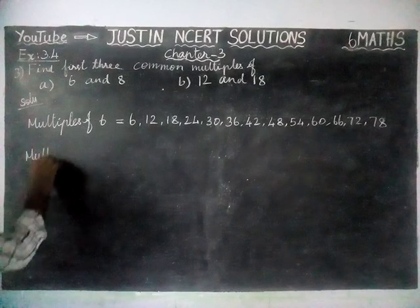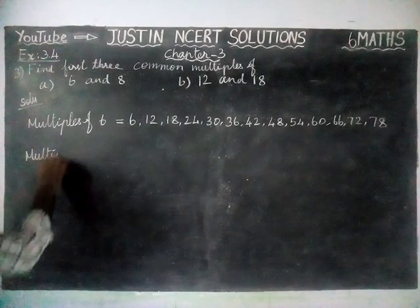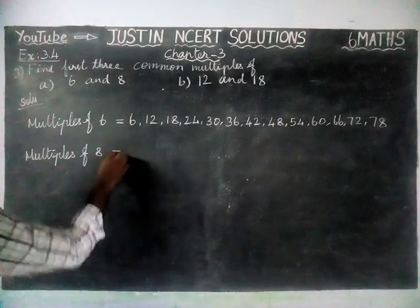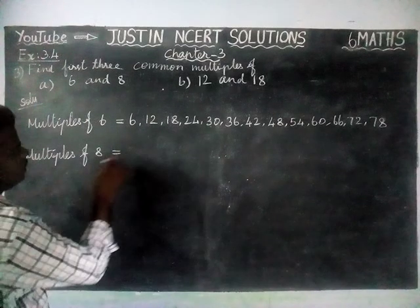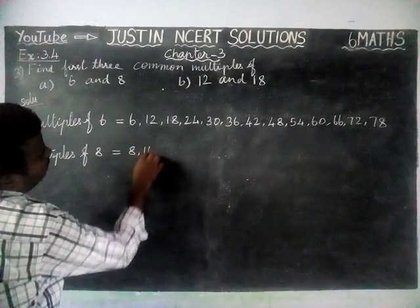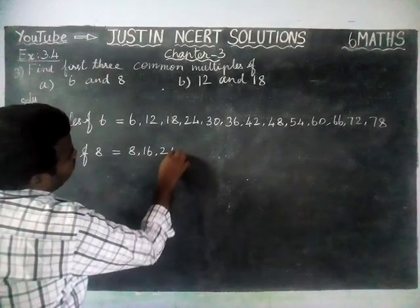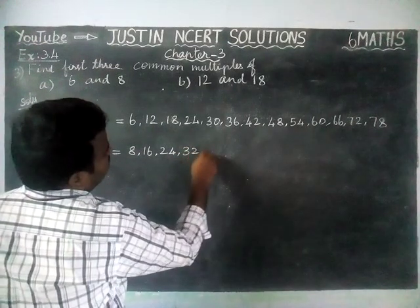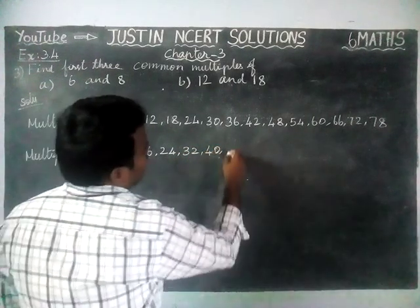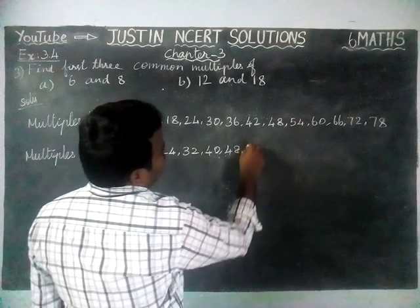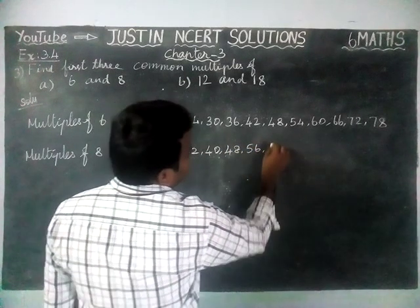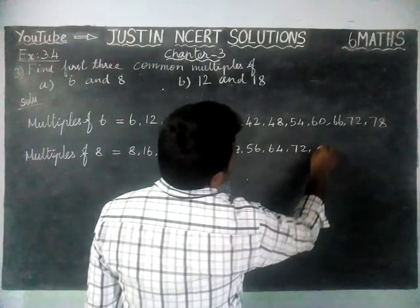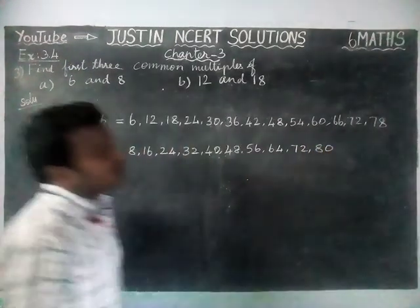Then we will find multiples of 8, which is equal to the 8th multiplication table: 8, 16, 24, 32, 40, 48, 56, 64, 72, 80. We will stop here itself.